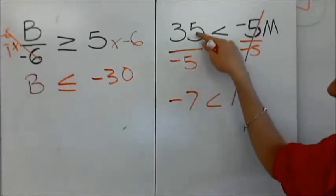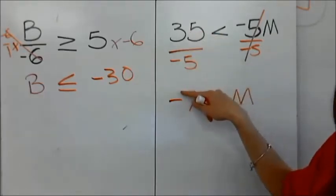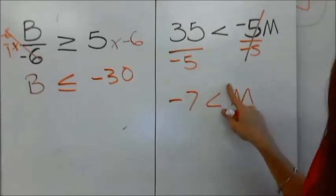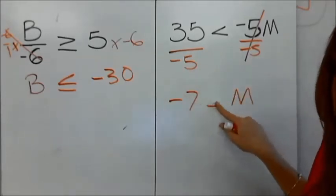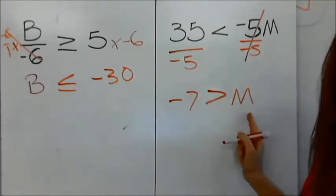And because I divided by a negative 5, this positive turned into a negative. So my sign cannot stay the same, because if I keep it the same, it would not be true. Negative 7 is greater than m.